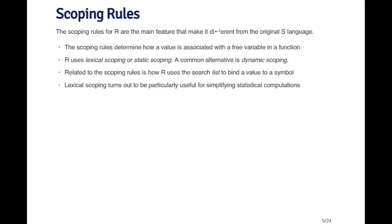This leads us to the scoping rules for R, which I think is the main feature that makes it different from the original S language. The scoping rules determine how a value is bound to a free variable in a function. Inside a function there are two types of variables: the formal arguments passed through the function definition, and other symbols found in the function body that are not function arguments. The question is how do you assign a value to those symbols? R uses what's called lexical scoping, or static scoping, which is a common alternative to dynamic scoping. This is related to how R uses the search list to bind a value to a symbol.